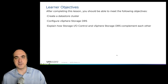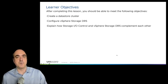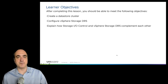We just covered storage IO control, which covers how to balance IO when you have multiple VMs trying to access the same data store. What if you have multiple data stores that you'd like to run together as a collective group — basically an aggregate of all the different data stores for a certain type of workload characteristic?